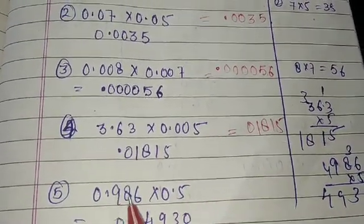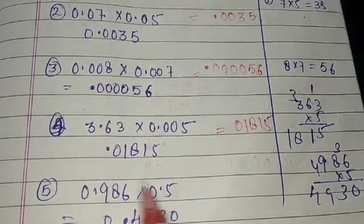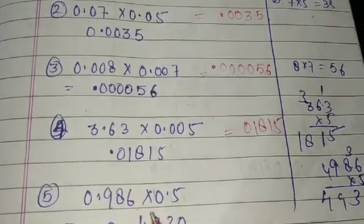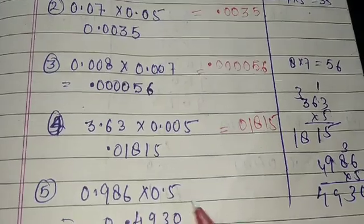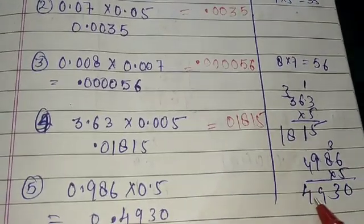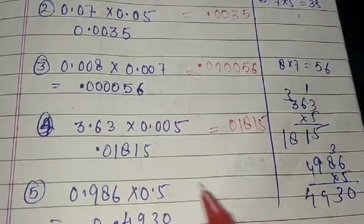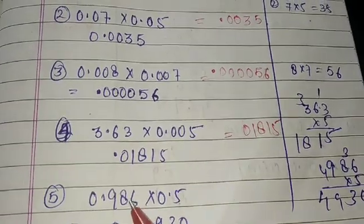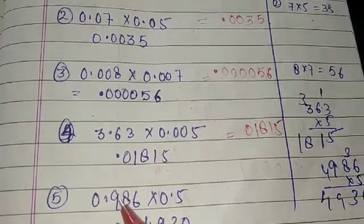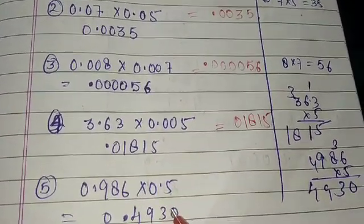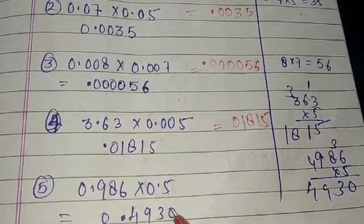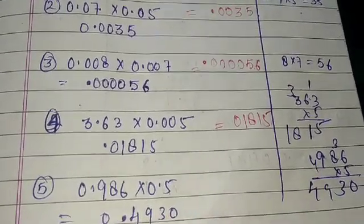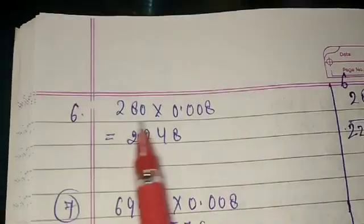Next: 9.86 into 5. Take digits: 986 times 5 = 4930. Count decimal places: 2 digits after point in 9.86, none in 5 — total 2 decimal places. Place point 2 from right: answer is 49.30, which simplifies to 49.3.